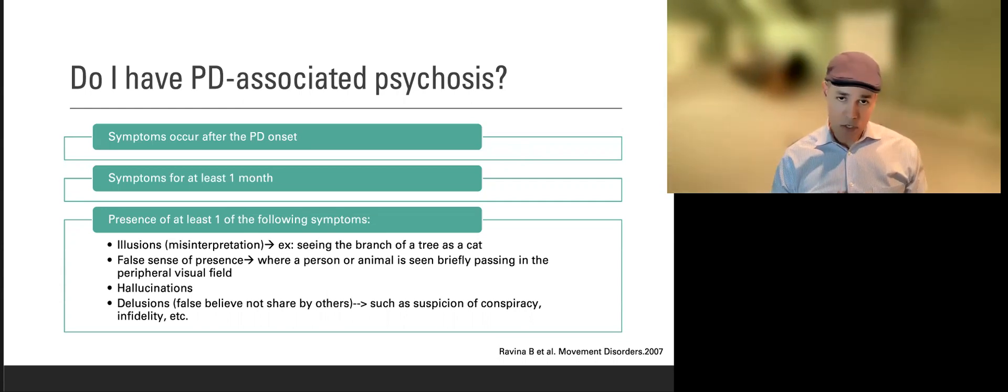The other one is hallucinations. Hallucination is the most common one, usually visual hallucinations, so seeing things that nobody else is seeing. The other one is delusion, which is very rare, approximately five percent of the psychosis in the setting of Parkinson, but very distressful, especially for the family.